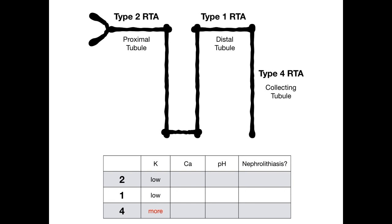This makes sense if you think about the physiology of what's actually happening at the collecting tubule. But if you just want to keep this simple and get your free points, repeat after me: 2-1-4, low, low, more. So that's the potassium.